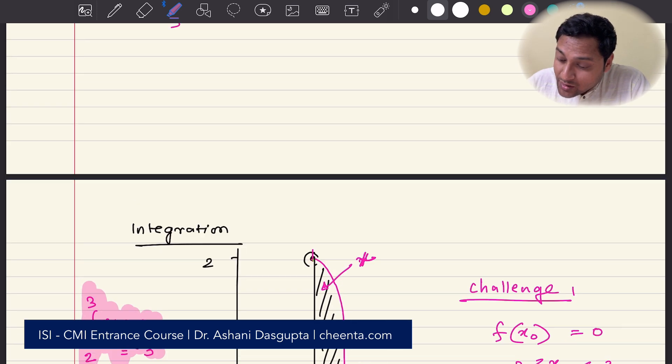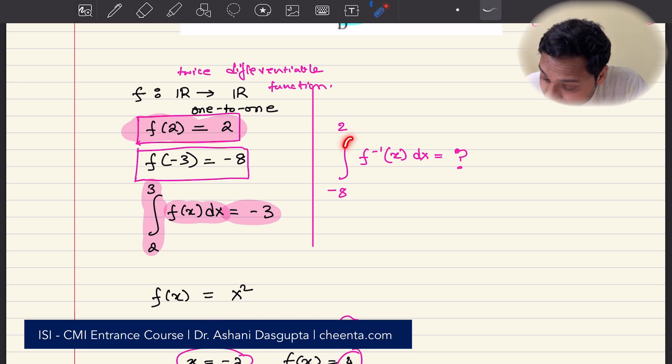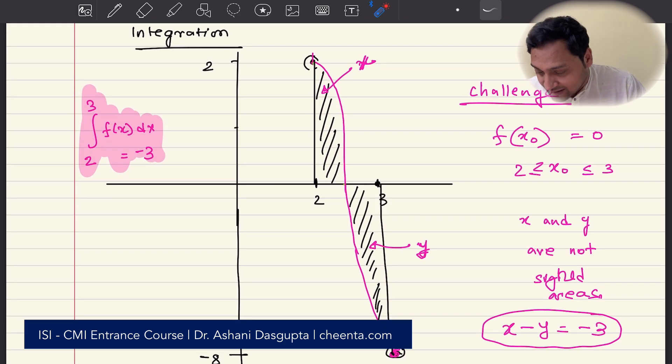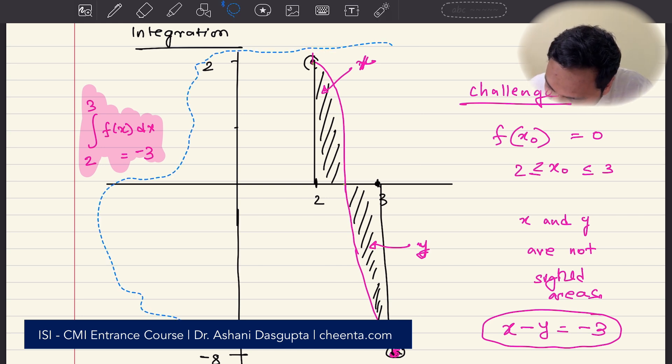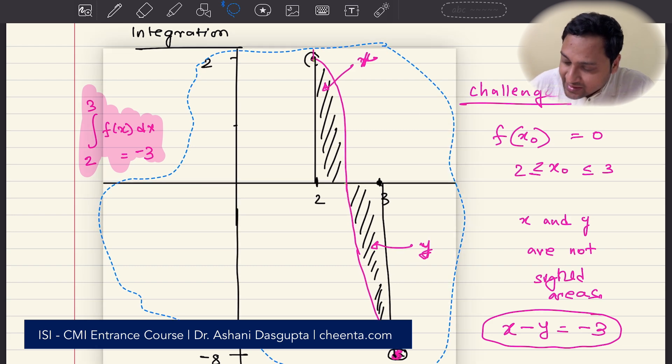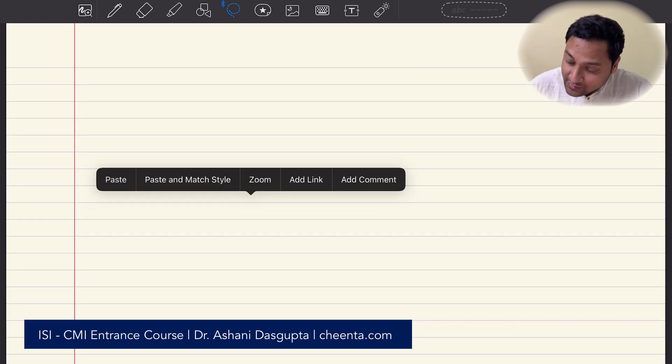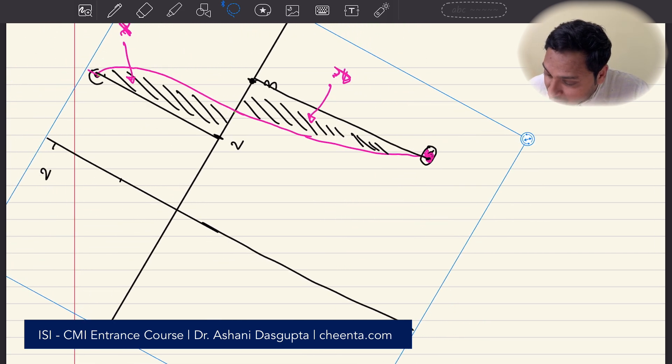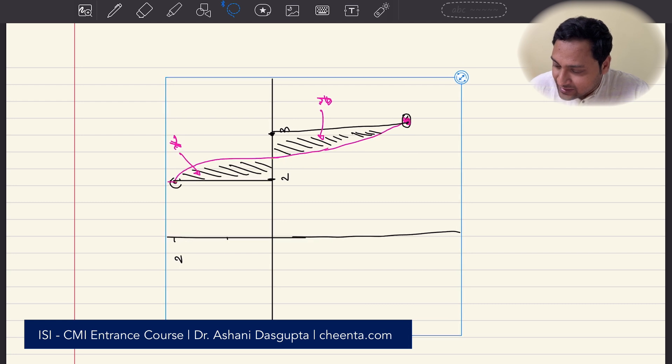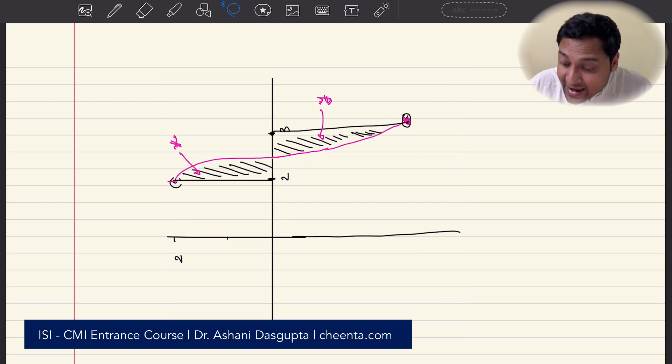So, this area is x and this area is y. Both are positive quantities. So, x and y are not signed areas. They're just the pure positive number, the area. Then, x minus y is given to be negative 3. So, that is the essence of the picture or of the expression. 2 to 3 f(x) dx integral is negative 3. This is given in the problem. The positive area minus the area below the x-axis, if you just subtract them, it will become negative 3. Great. So, now what do we want? We want to find out the minus 8 to 2 f inverse x dx. We want to find out that particular area. So, what is f inverse x dx? What is the picture for that? So, what you have to do is you have to just turn the picture around.